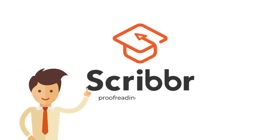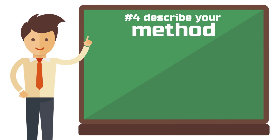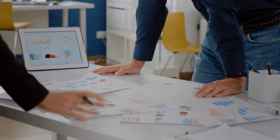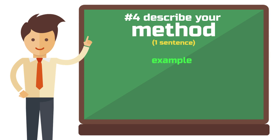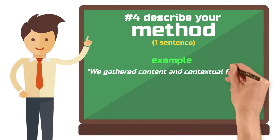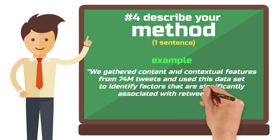Before we continue with Step 4, a few words about the sponsor of this video, Scribba. If you are looking for a proofreading service or plagiarism check for your scientific work, I can wholeheartedly recommend the team at Scribba. Just have a look at Scribba.com and send a short email to info@Scribba.eu for an exclusive coupon code. Step 4: The method — what method do you use to approach the problem? One sentence. The choice of method is linked precisely to the research problem; it is the tool you use to explore and address the problem. For the method sentence, you could write: 'We gathered content and contextual features from 74 million tweets and used this data set to identify factors that are significantly associated with retweet rate.'